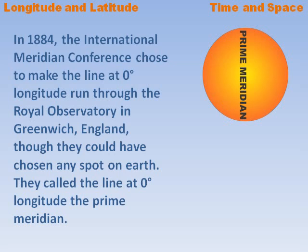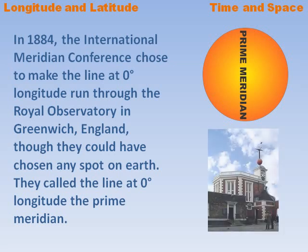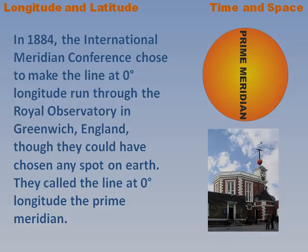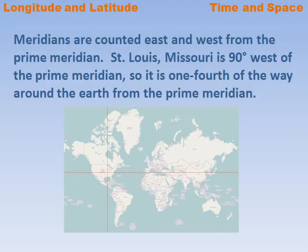In 1884, the International Meridian Conference chose to make the line at zero degrees longitude run through the Royal Observatory in Greenwich, England, though they could have chosen any spot on Earth. They called the line at zero degrees longitude the Prime Meridian.